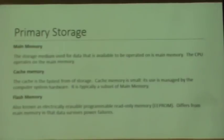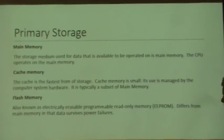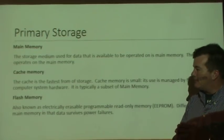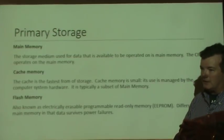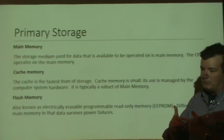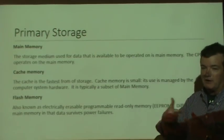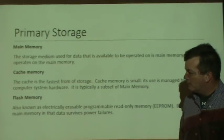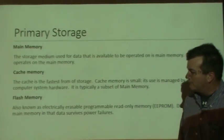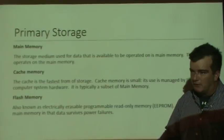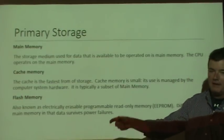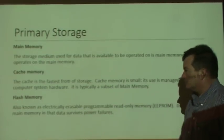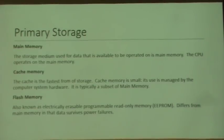Primary storage is storage that typically runs on electricity, or that a processor can read and write from very quickly. So it's like main memory, cache memory, maybe even flash memory that you can read and write to very quickly. You don't have to take lots of data, move it into memory, make changes to it, and then copy the result back out to memory.